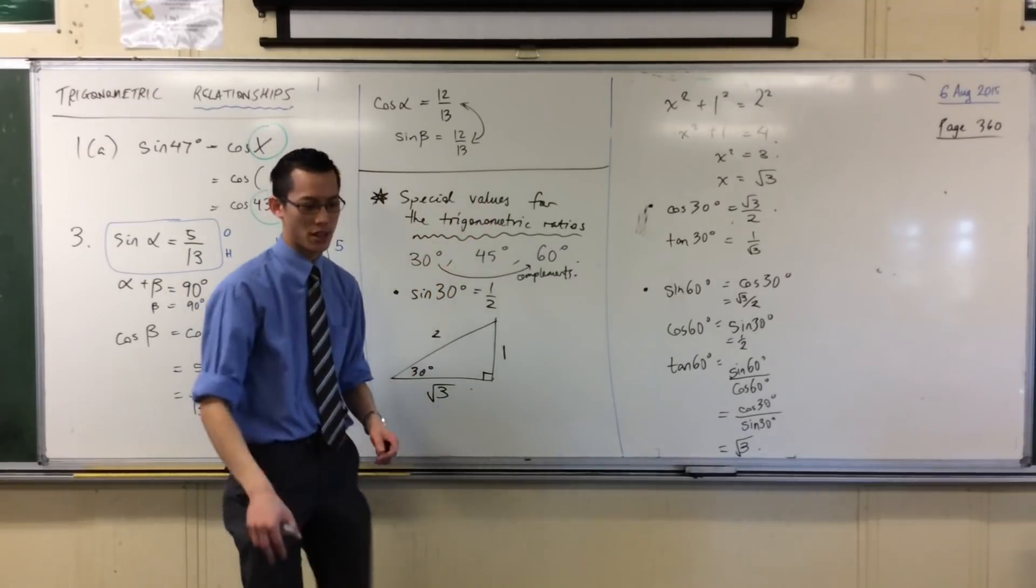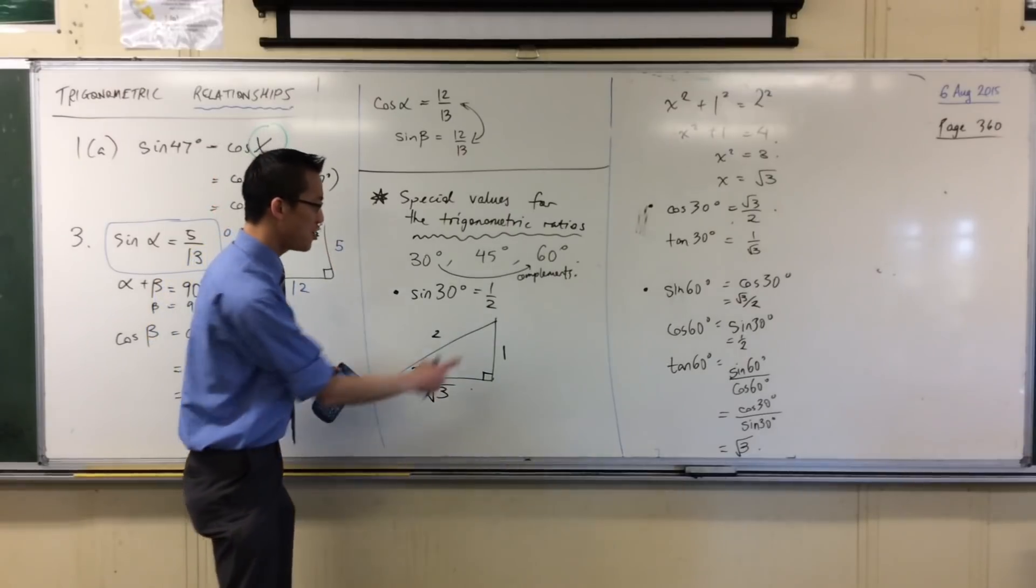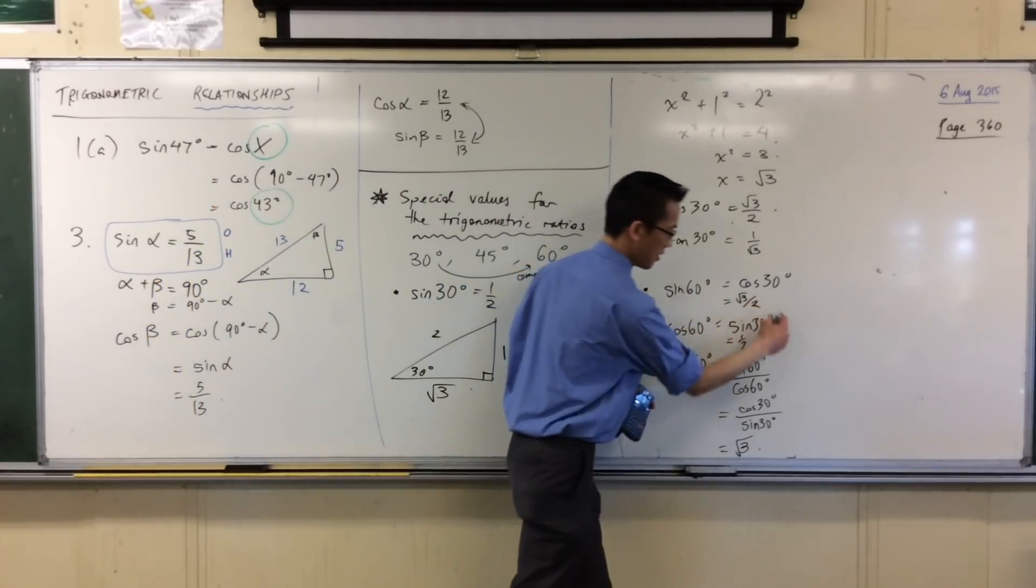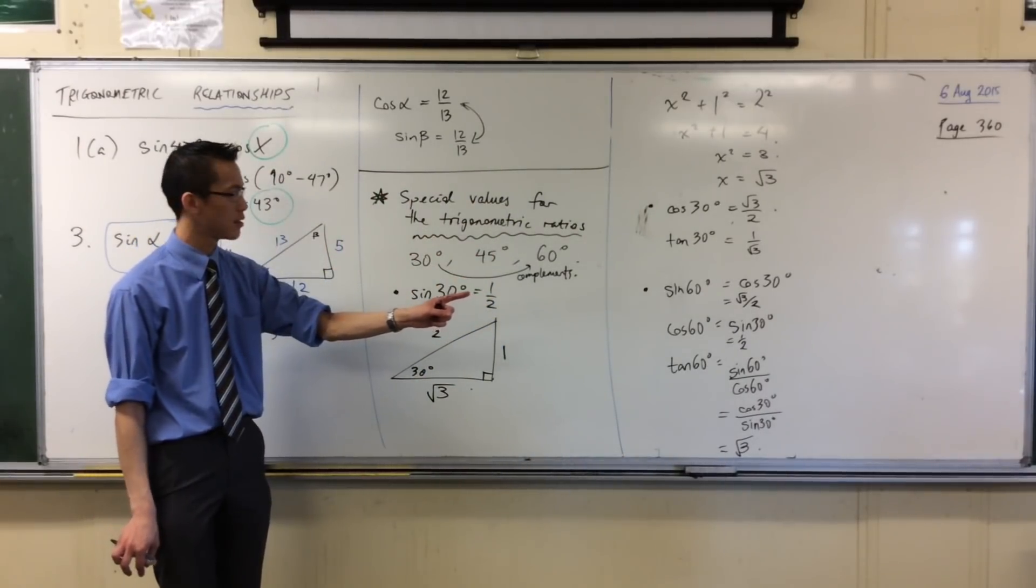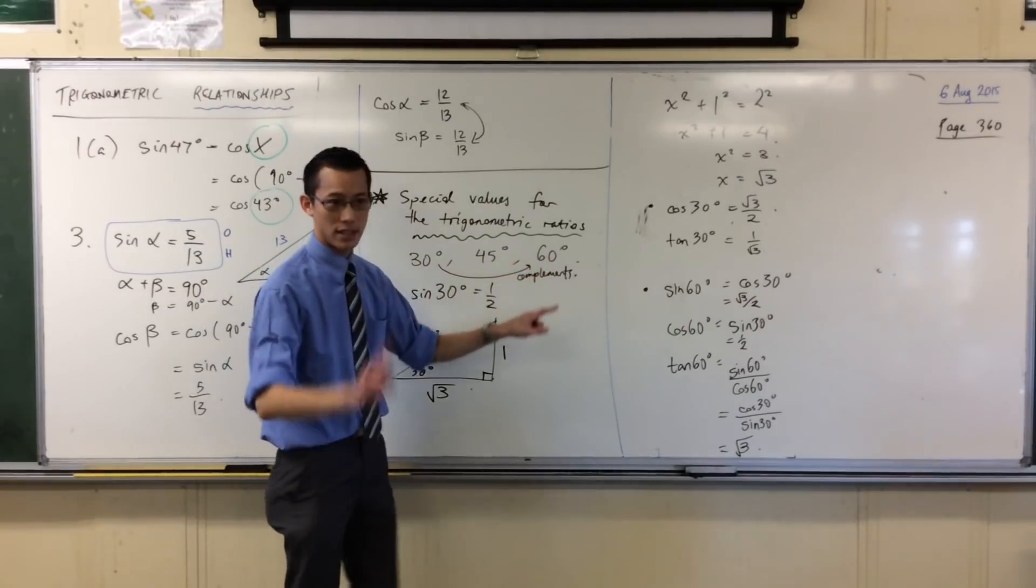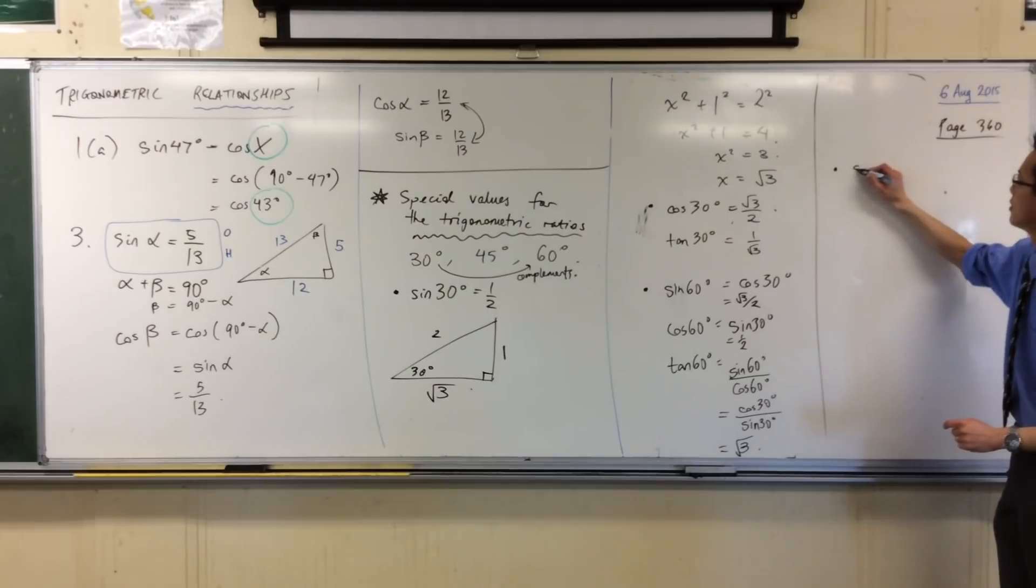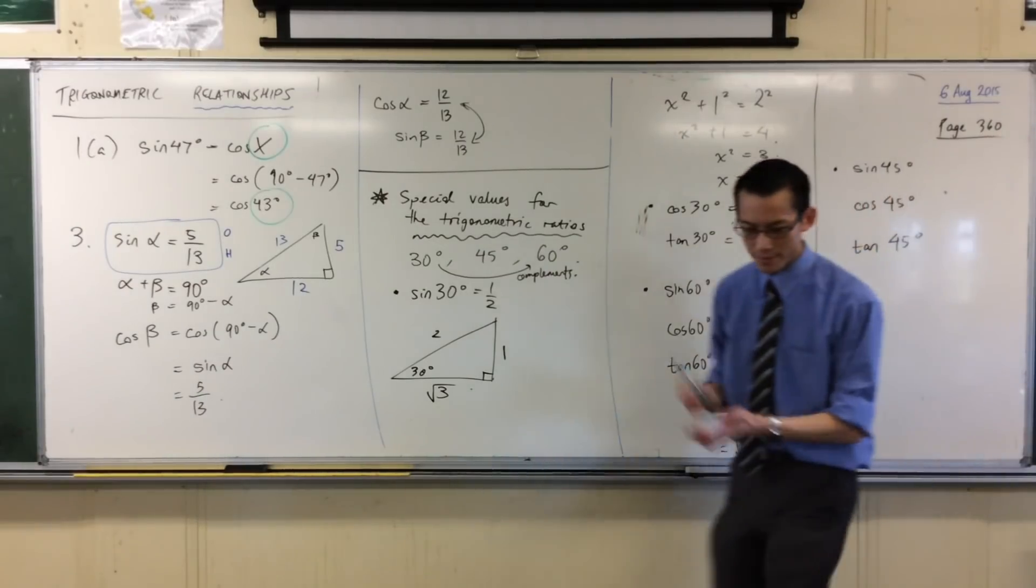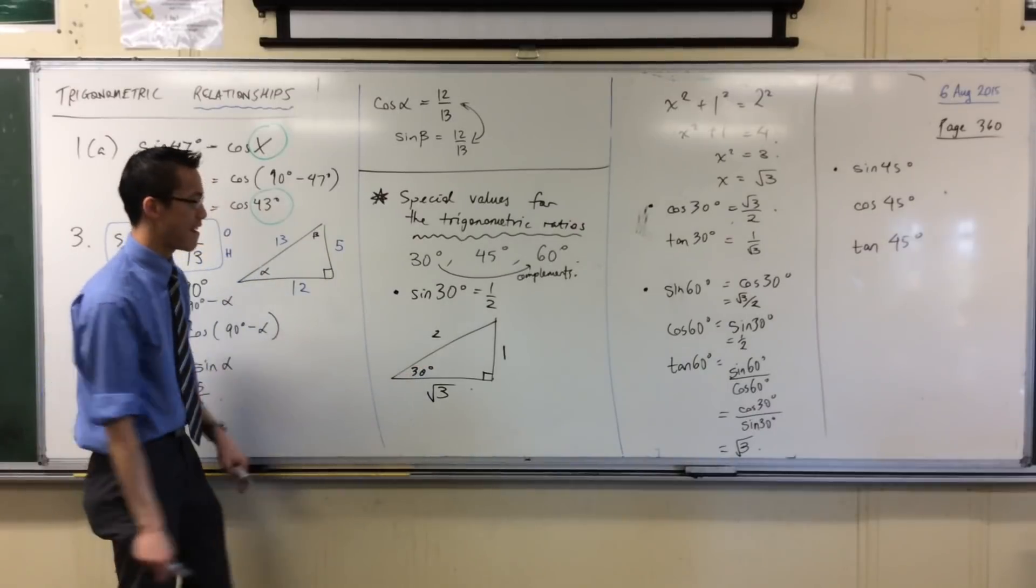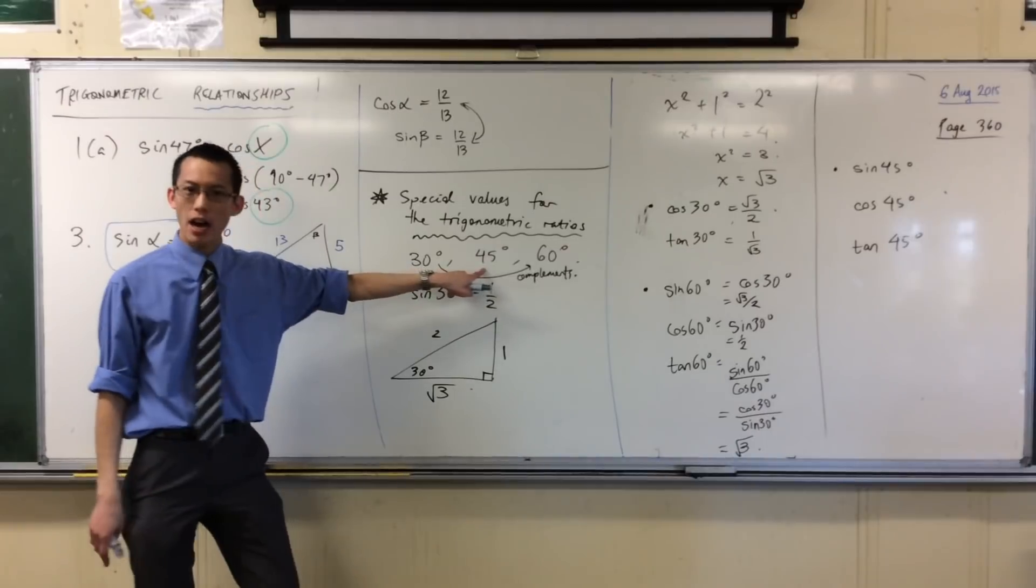You can see these are special values. Because rather than you go to your calculator and you get some rubbish out of that, you know exactly what these are equal to, which is why another name for these are the exact values for the trigonometric ratios. We did 30. We did 60. Last one. We drew this one diagram, and it covered 30 and 60. That's nice. It's because they're complements. It's not going to cover 45. I need a new diagram.